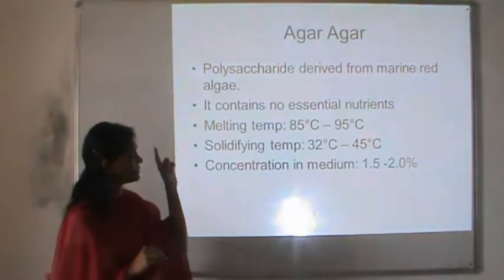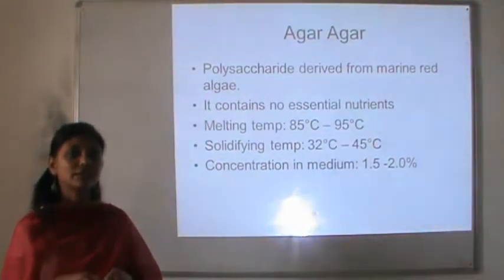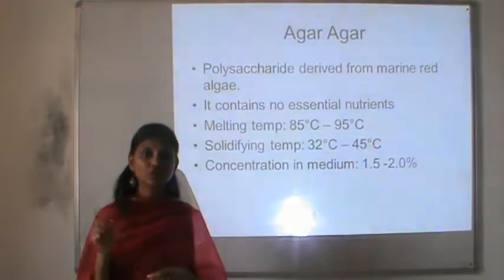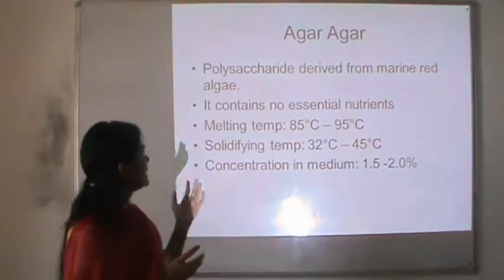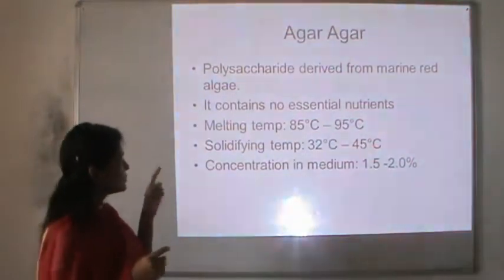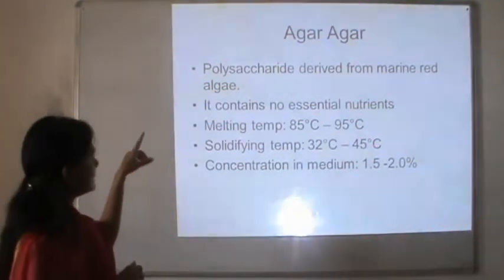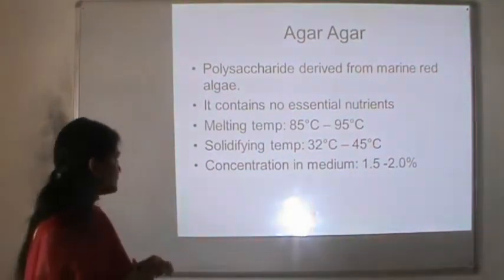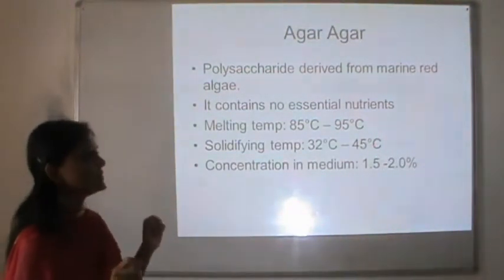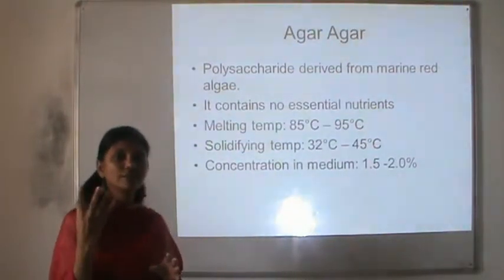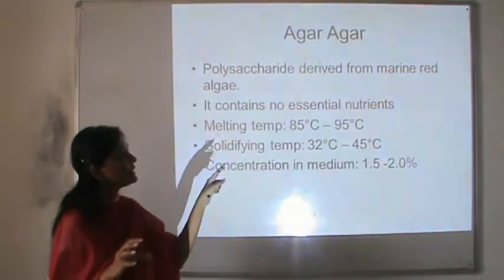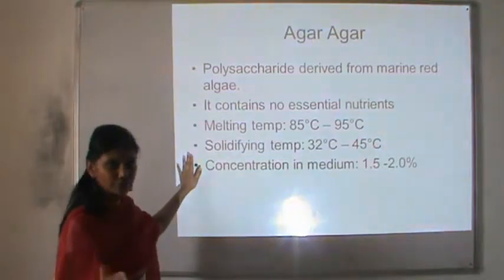Now let us look into some important properties of agar agar, since it is used as a solidifying agent in microbiology. First, regarding its source: it is found in marine red algae, and this polysaccharide is extracted from that red algae. It is not a nutritional component in the media — the role of agar agar in the media is only for solidifying purpose; it does not serve as a source of nutrient. The melting point of agar agar is above 85°C to 95°C, and the gelling temperature is 32°C to 45°C.